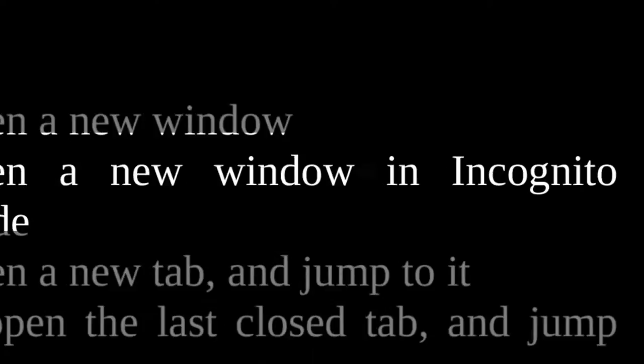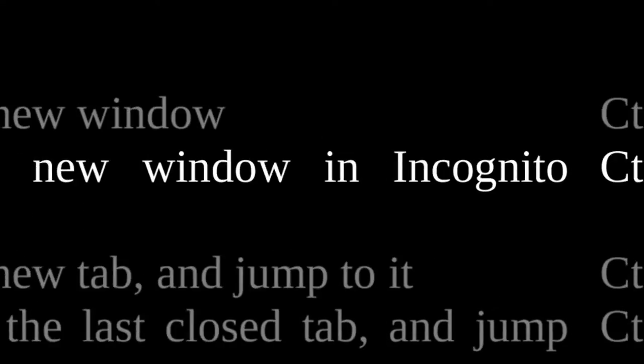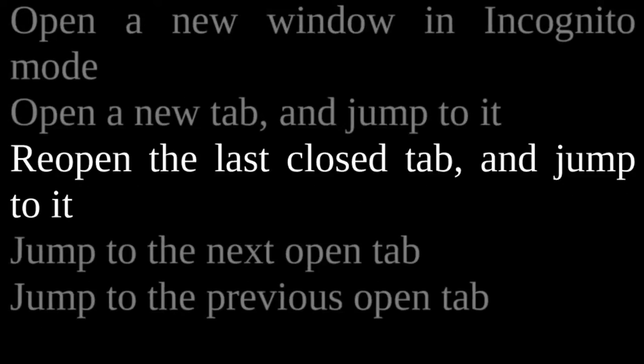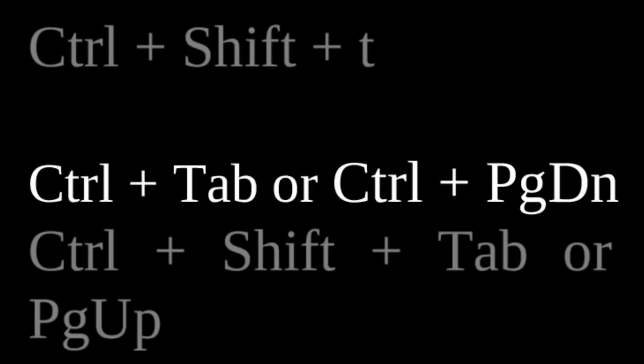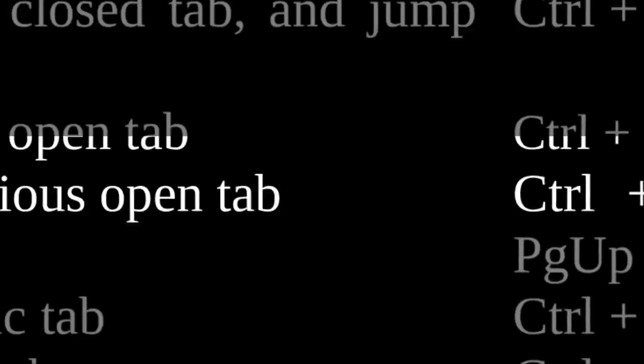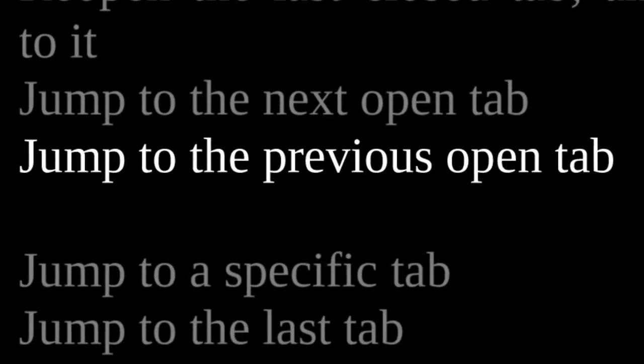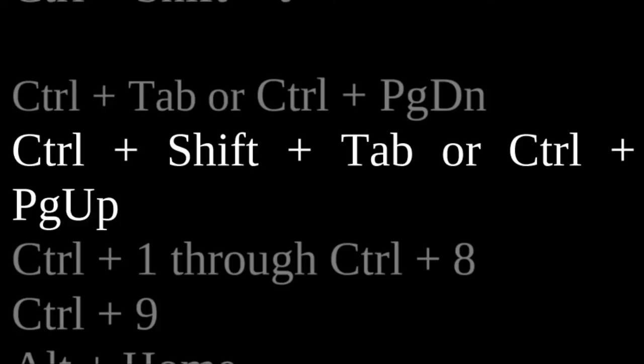In summary: to open a new window, press Ctrl N. To open a new window in incognito mode, press Ctrl Shift N. To open a new tab and jump to it, press Ctrl T. To reopen the last closed tab and jump to it, press Ctrl Shift T. To jump to the next open tab, press Ctrl Tab or Ctrl Page Down. To jump to the previous open tab, press Ctrl Shift Tab or Ctrl Page Up.